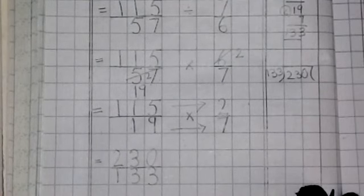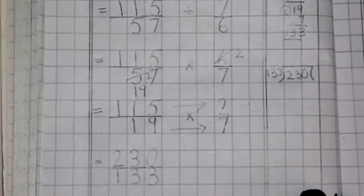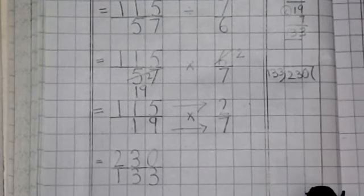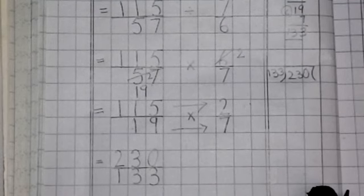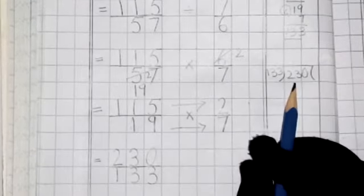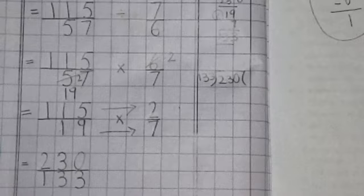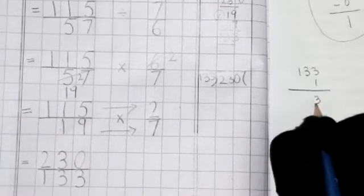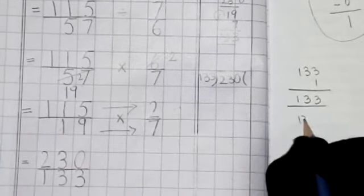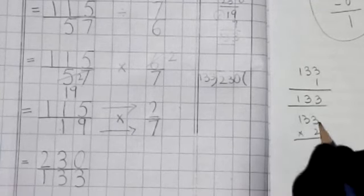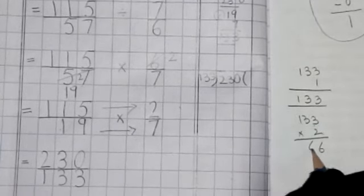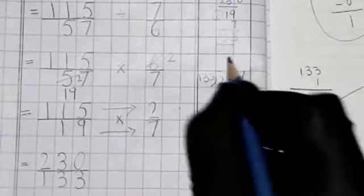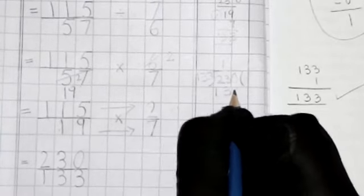Now 230 divided by 133. We multiply by 1. If we do 133 times 1, we will get 133. Let's check with 2. 2 threes are 6. 2 threes are 6. 2 ones are 2. This is 266. And the dividend is 230. So, what do we write?